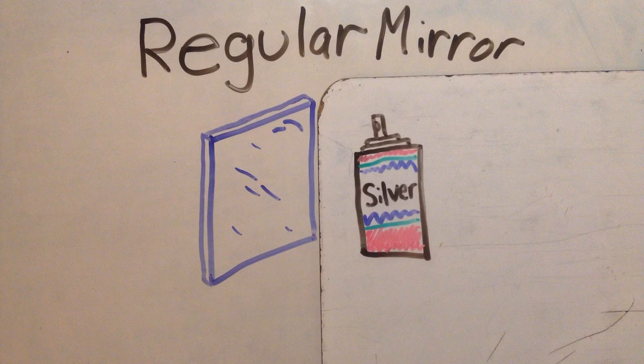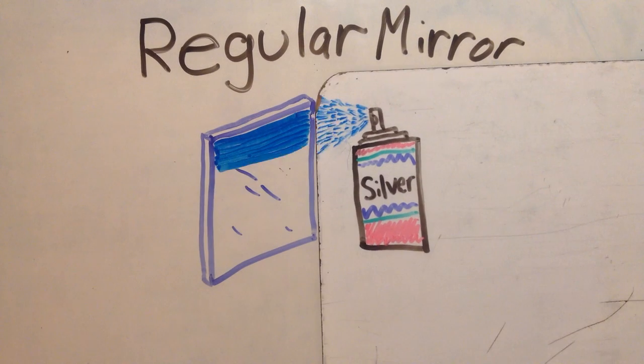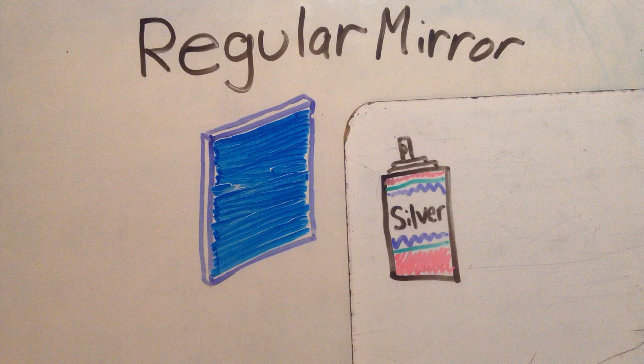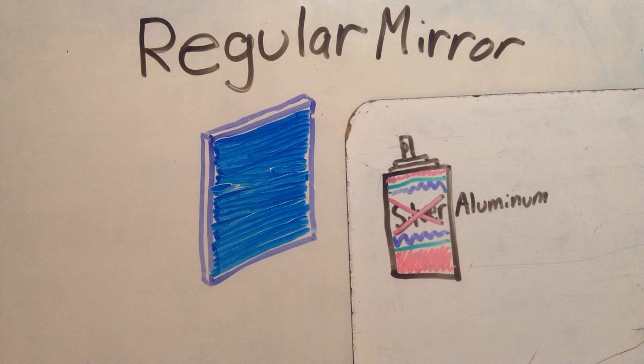For a regular mirror, you start off with a pane of glass. The glass is silvered, which is a process of spraying liquid silver on one side of the glass. Nowadays aluminum is used because it is cheaper.